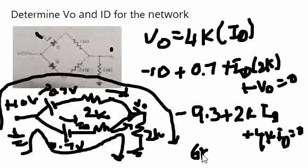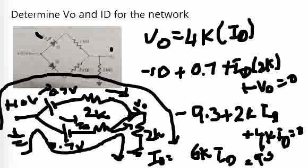Now, that means 6K ID is equal to 9.3, which means ID is equal to, if we do the calculation in the calculator, 9.3 divided by 6, which is around 1.55 milliamps. So that's the current in each branch. This is 1.55, this is 1.55, and the total current into this branch...